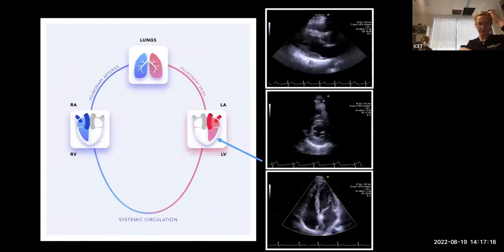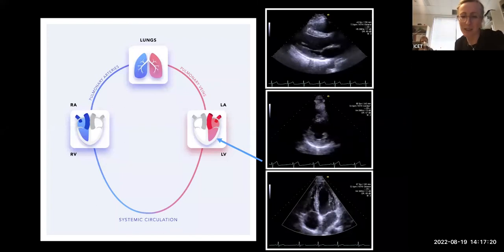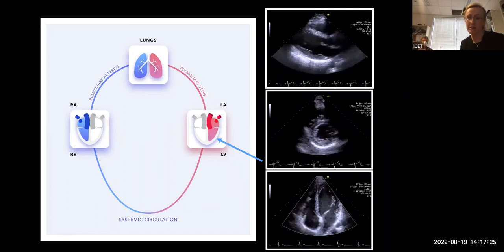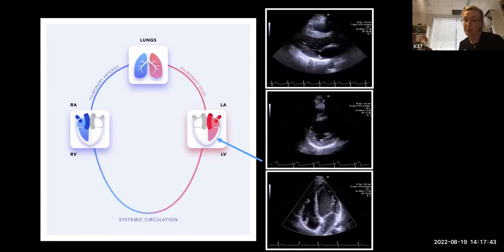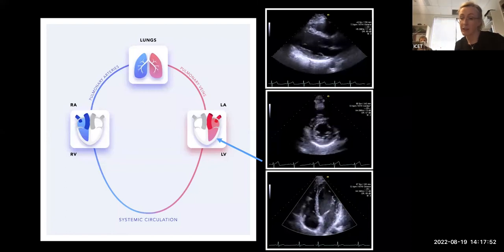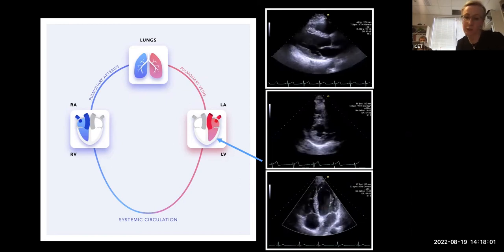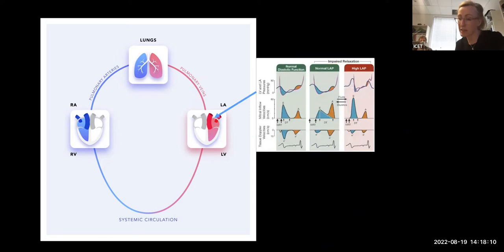When thinking about the role of echo in ARDS, be systematic and establish whether there are raised left atrial pressures — that's really what we want to know. Cardiogenic and non-cardiogenic ARDS can coexist, with a fair amount of overlap in these two groups. Start with LV size and systolic function, because impaired systolic function raises propensity to elevated LA pressure. Then use the ASE guidelines — the best we have — for assessing diastolic function.